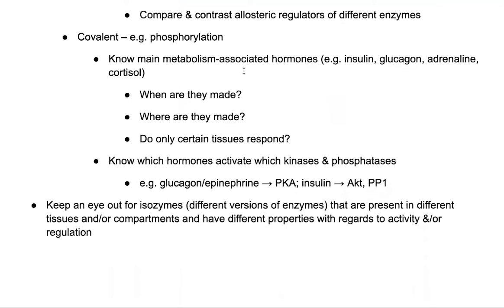You might activate all of these things partway if you have a lot of energy, but then you can further fine-tune the regulation based on where that energy is coming from. The other main way we can control an enzyme is by altering it covalently, such as by adding a phosphate group. This is typically going to be associated with hormonal control.